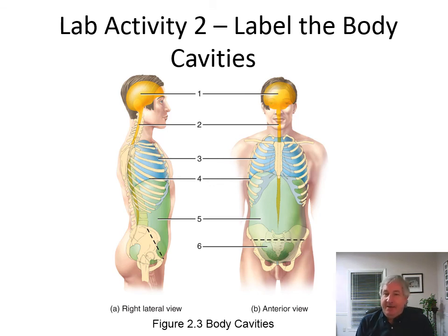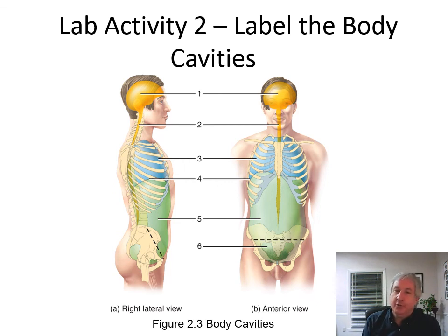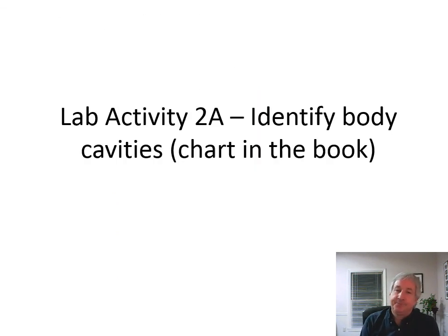Label the body cavities on your handout — go through and label the dorsal and ventral body cavities and the thoracic, abdominal, and pelvic cavities. We'll do those in the lab. Also look at the chart in the book identifying the body cavities.